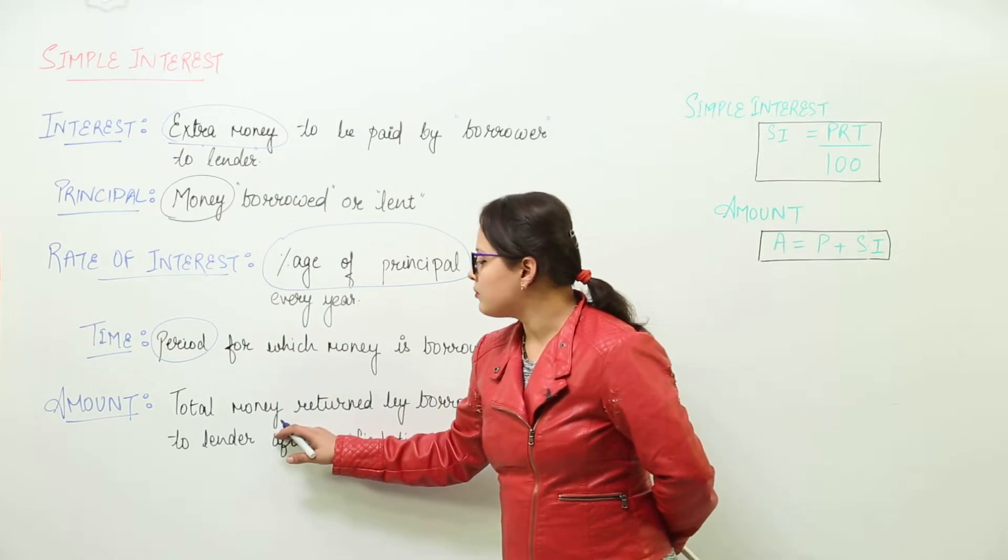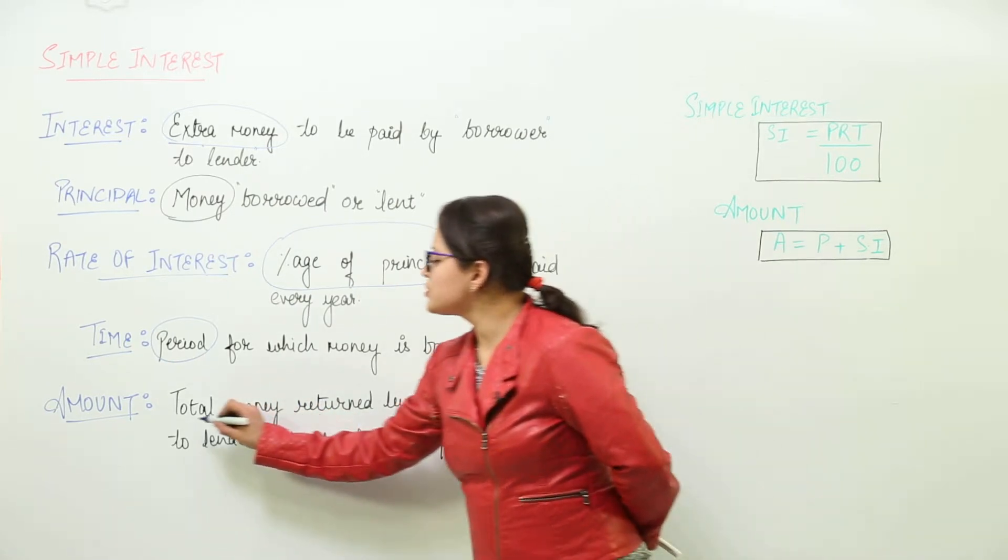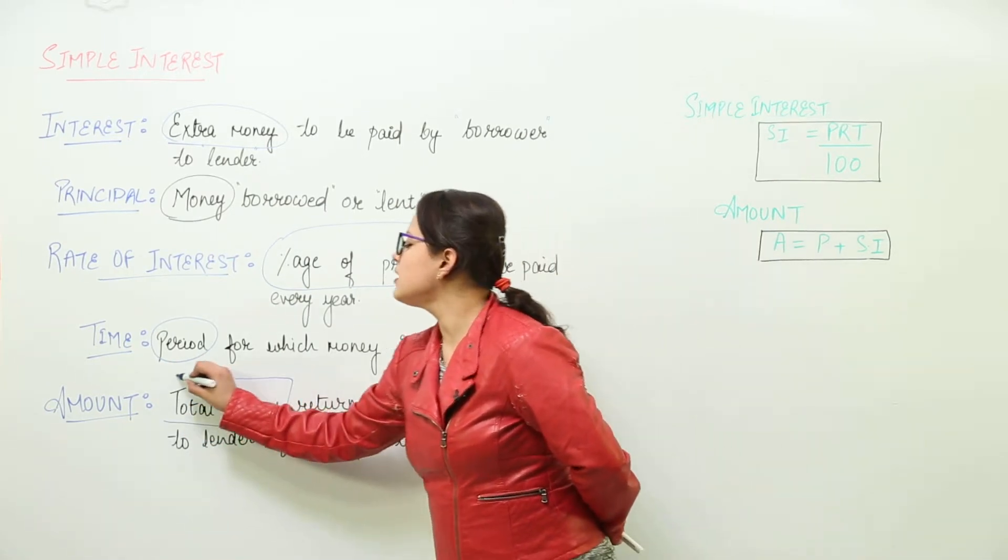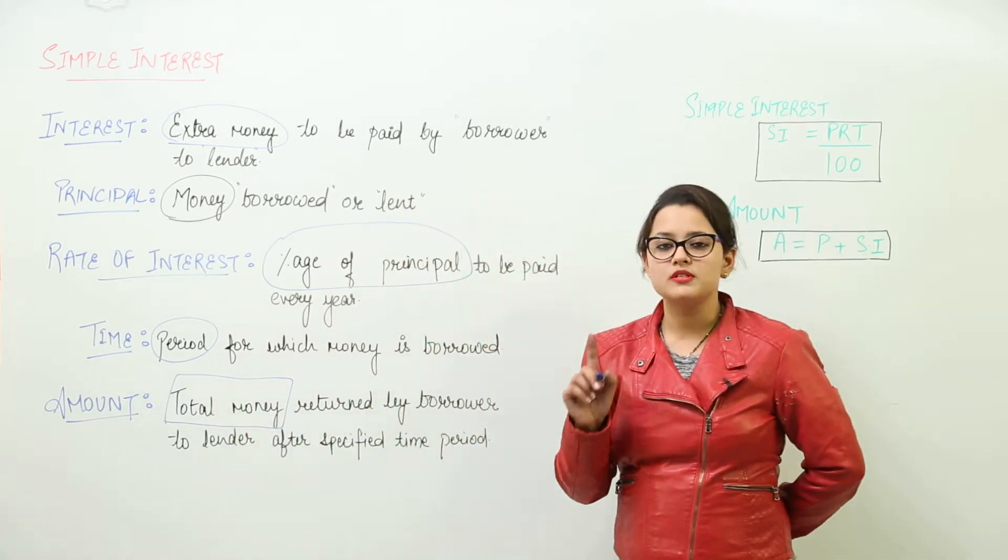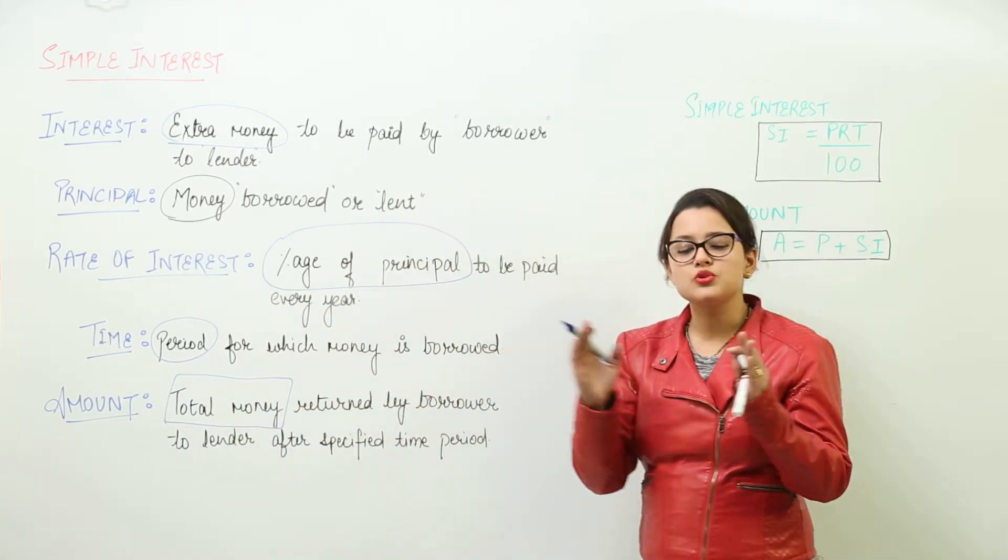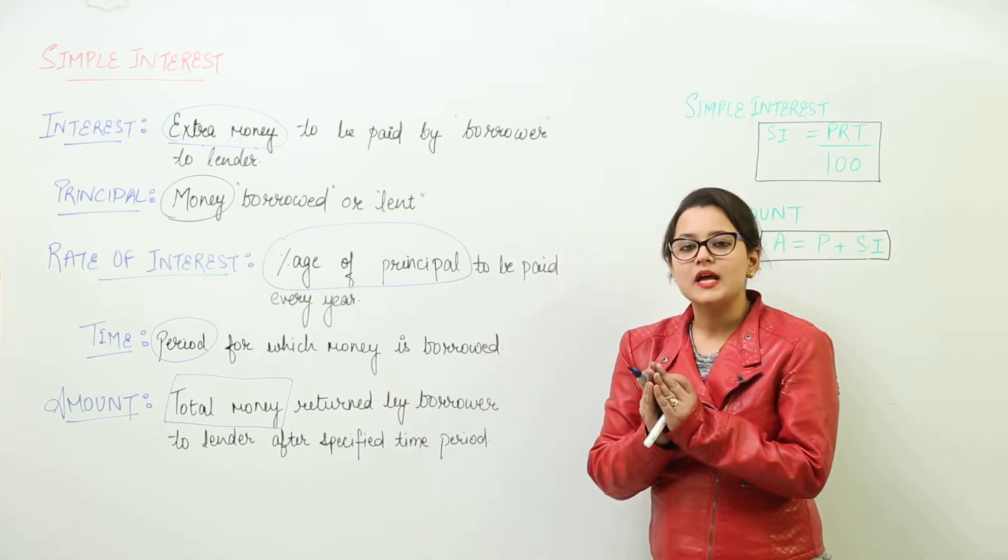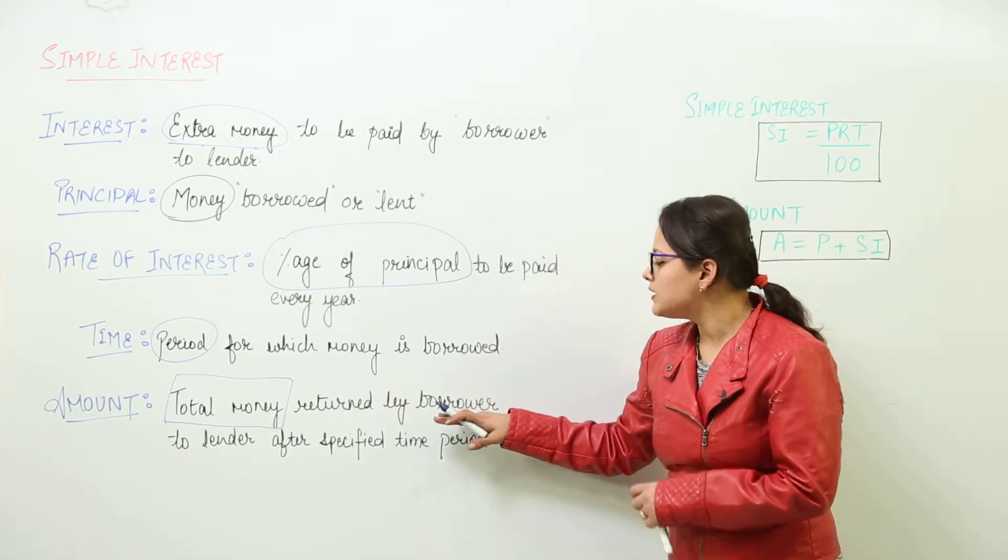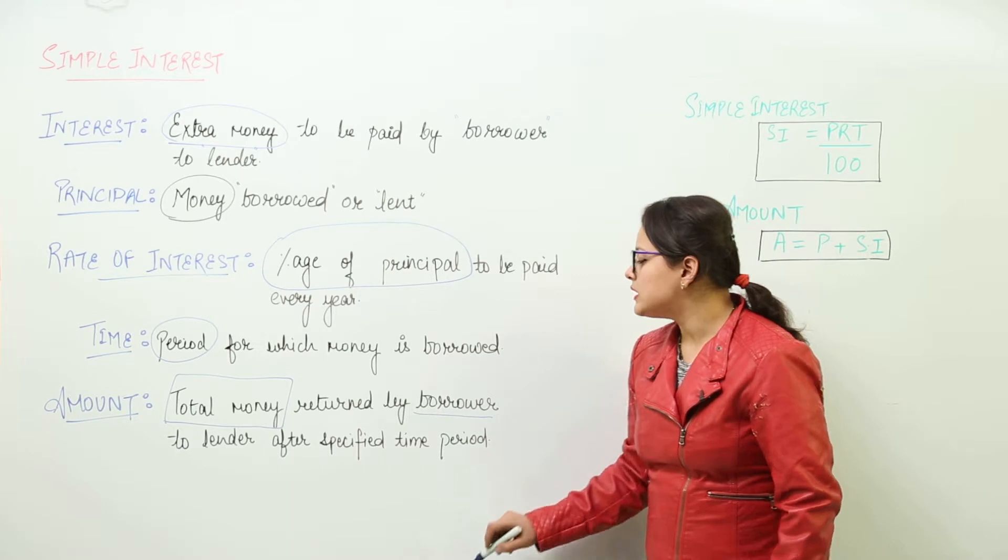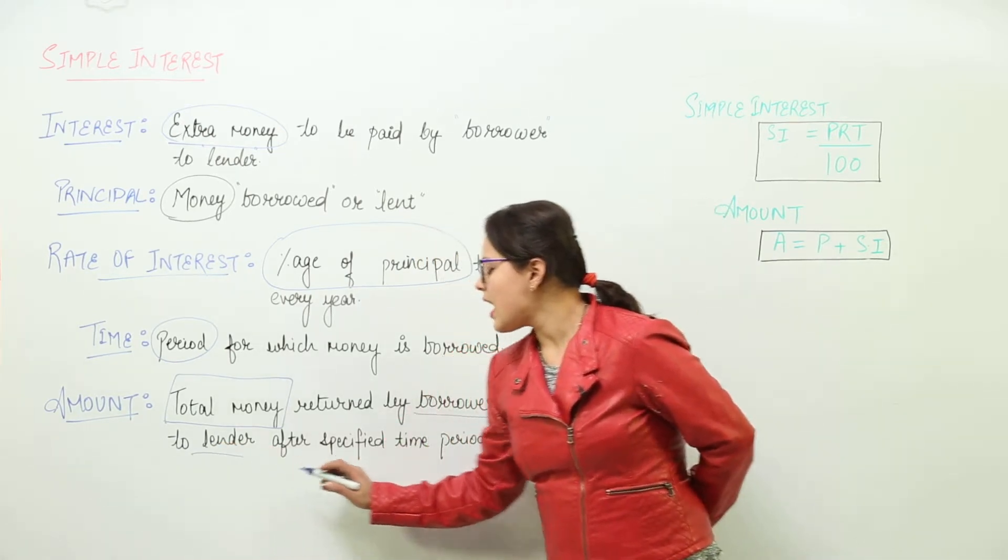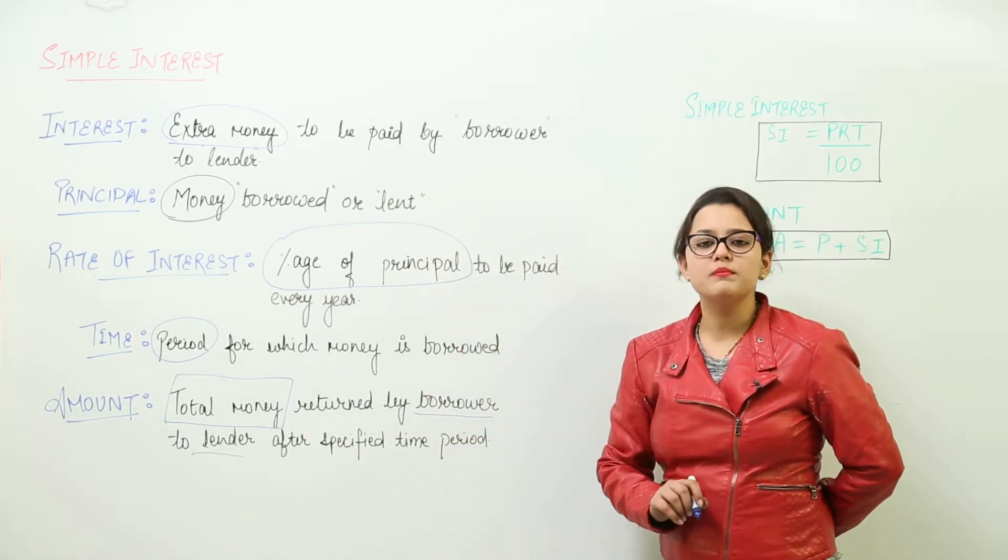Next is the amount. Now, amount is the total money. Please pay attention. Do not get confused in the principal, interest, and amount. Amount is the total amount of money that is to be returned by the borrower to the lender after the specified time period.